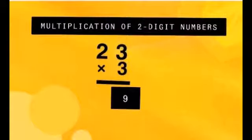In this example, we multiply 23 by 3. First, we arrange the numbers in columns as shown and multiply the ones place first.